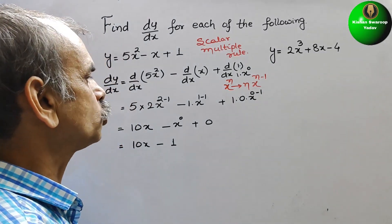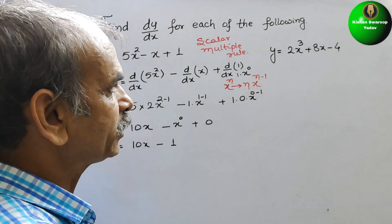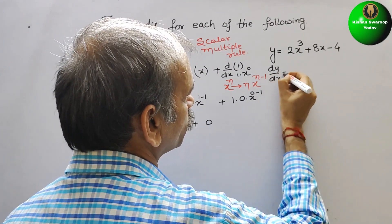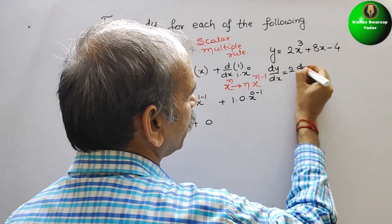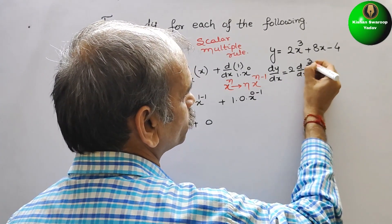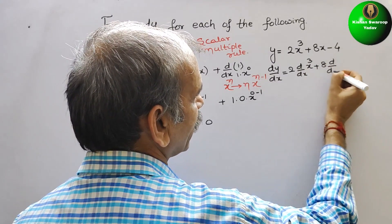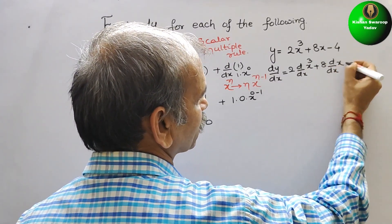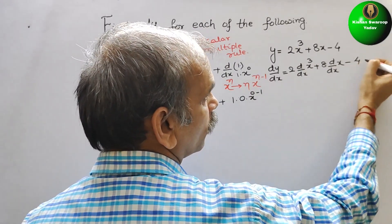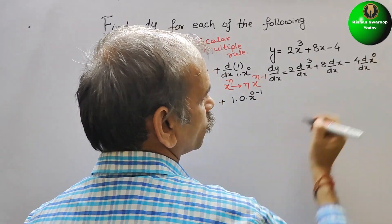Now comes the second one. Here also we have to do the same thing. This will come as dy/dx equal to 2·dy/dx of x³ plus 8·dy/dx of x, minus 4·dy/dx of x to the power of 0.